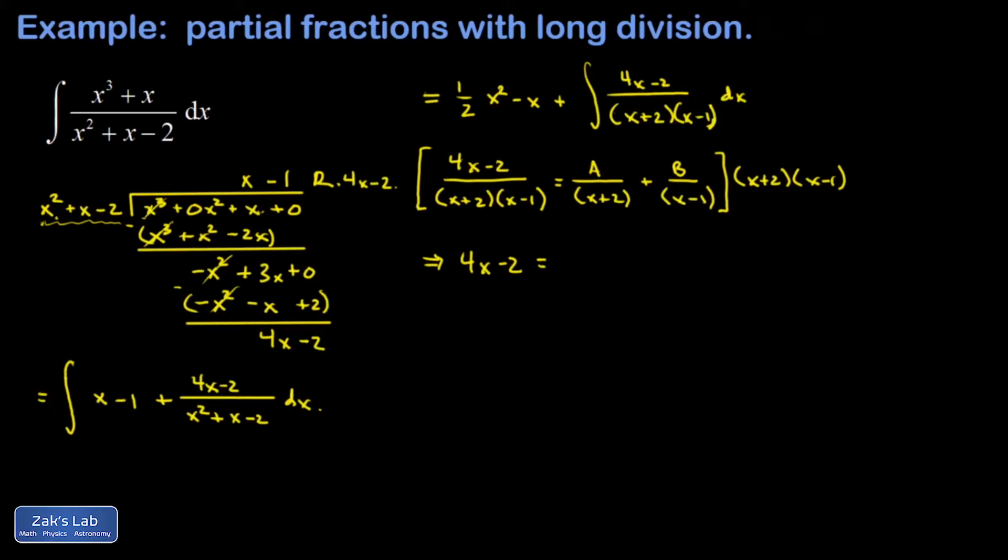The factor of x plus 2 cancels out for my first term on the right-hand side, so that leaves me with A times x minus 1. And the factor of x minus 1 cancels out for the second term, leaving me with B times x plus 2.